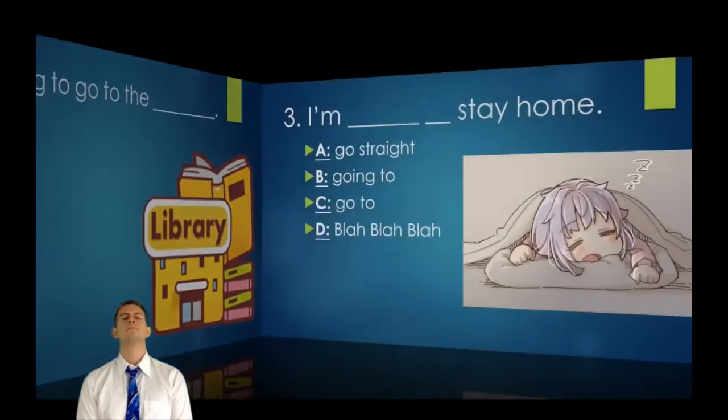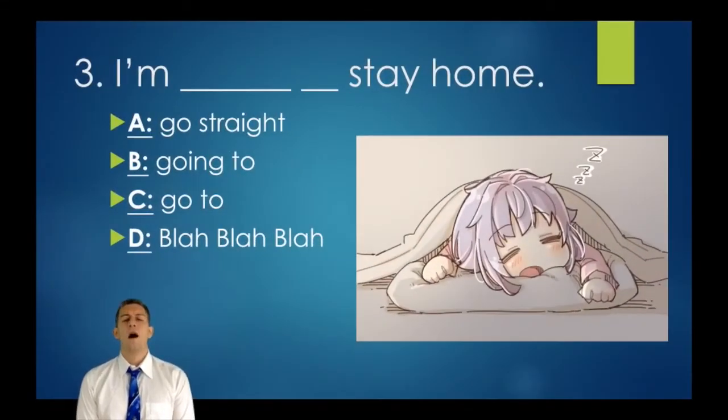Number three. I'm going to stay home. A, I'm go straight; B, I'm going to stay home; C, I'm go to stay home; D, blah blah blah. Stay home. A, B, or C. Go.